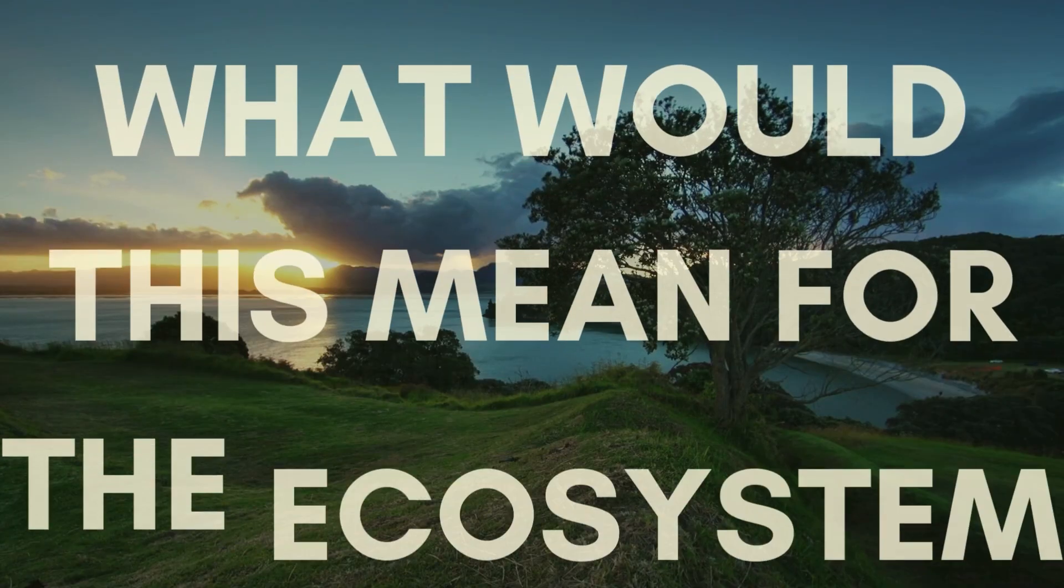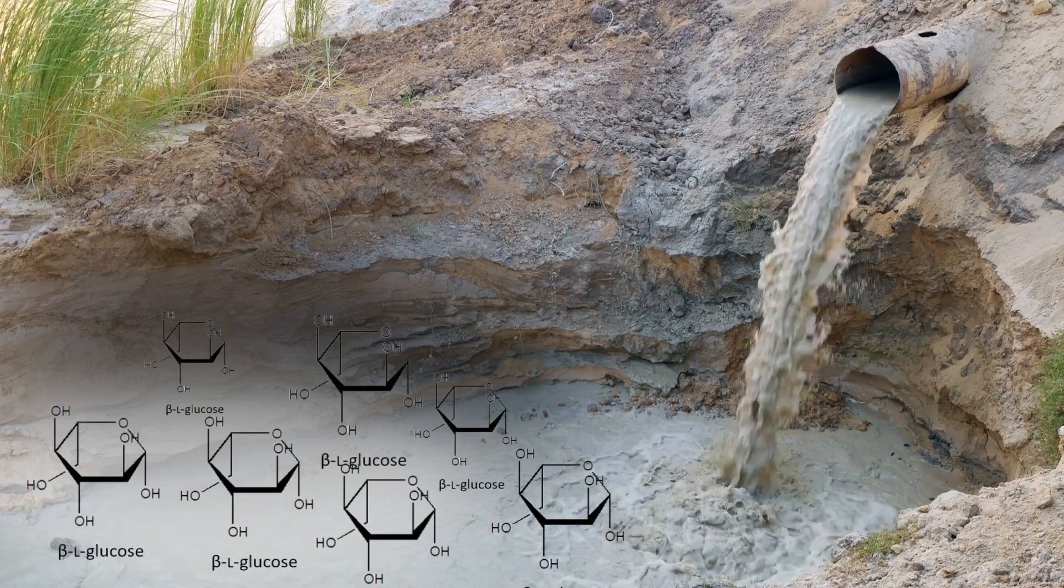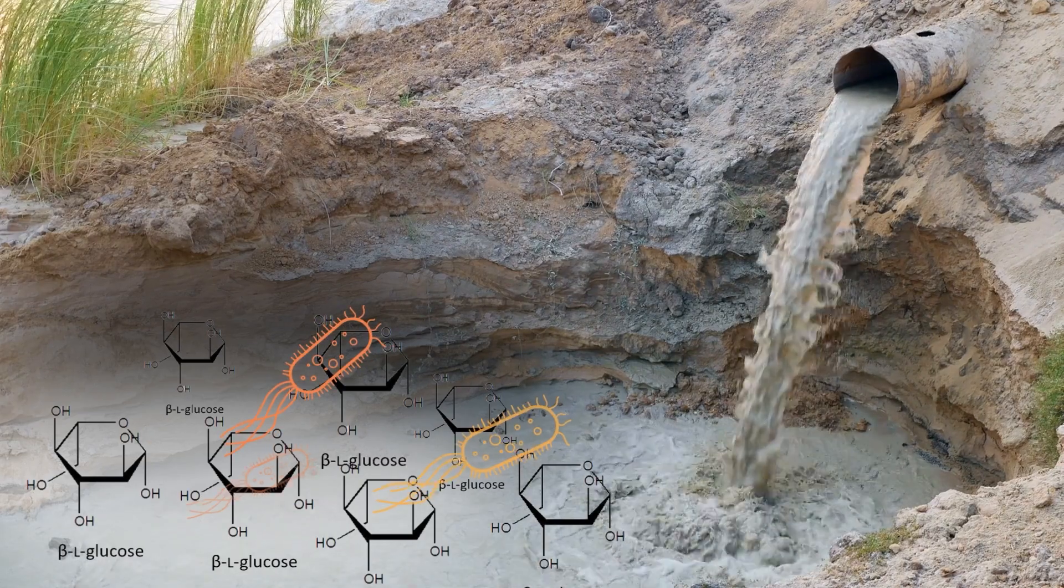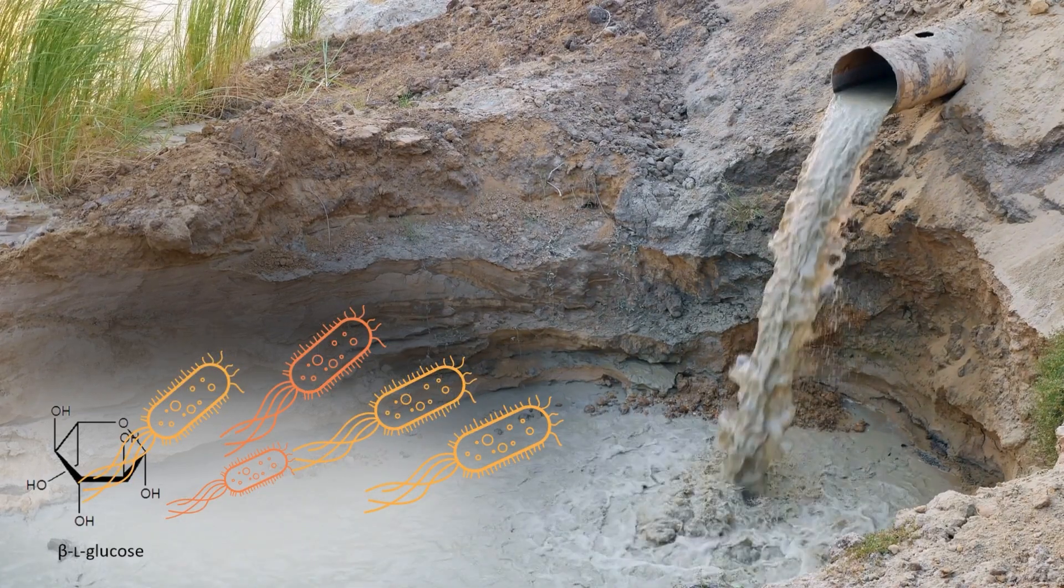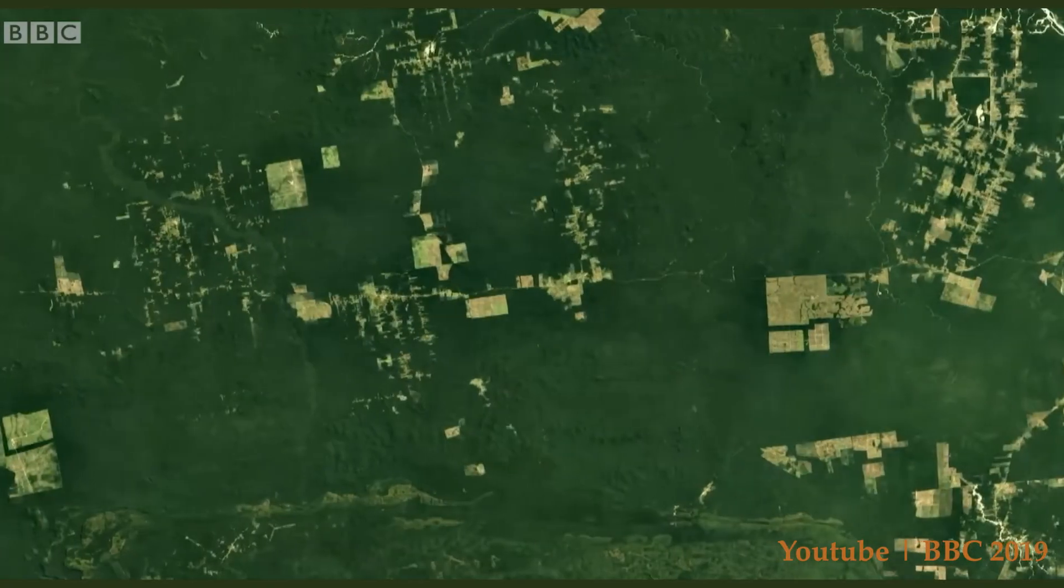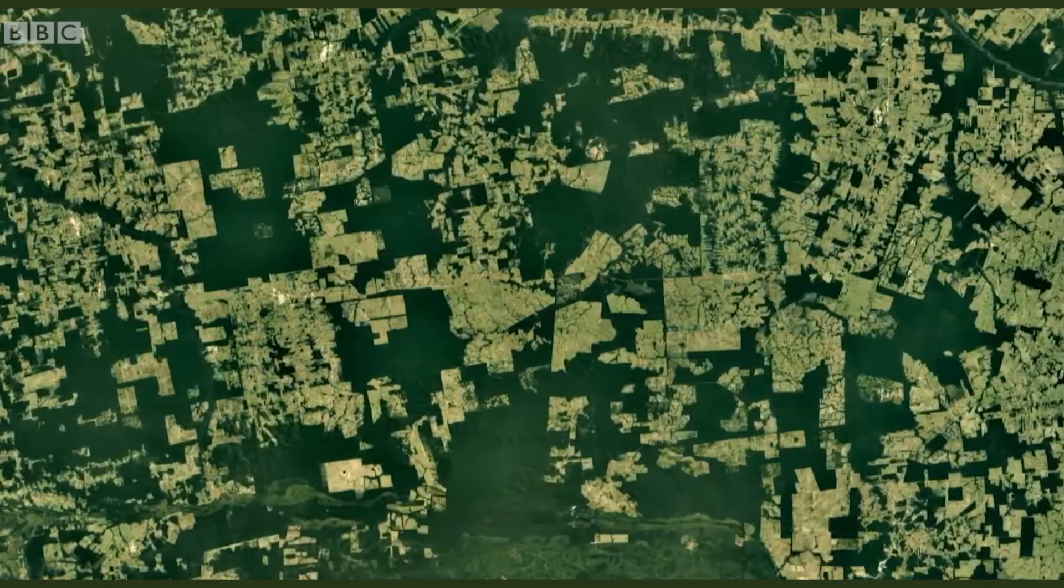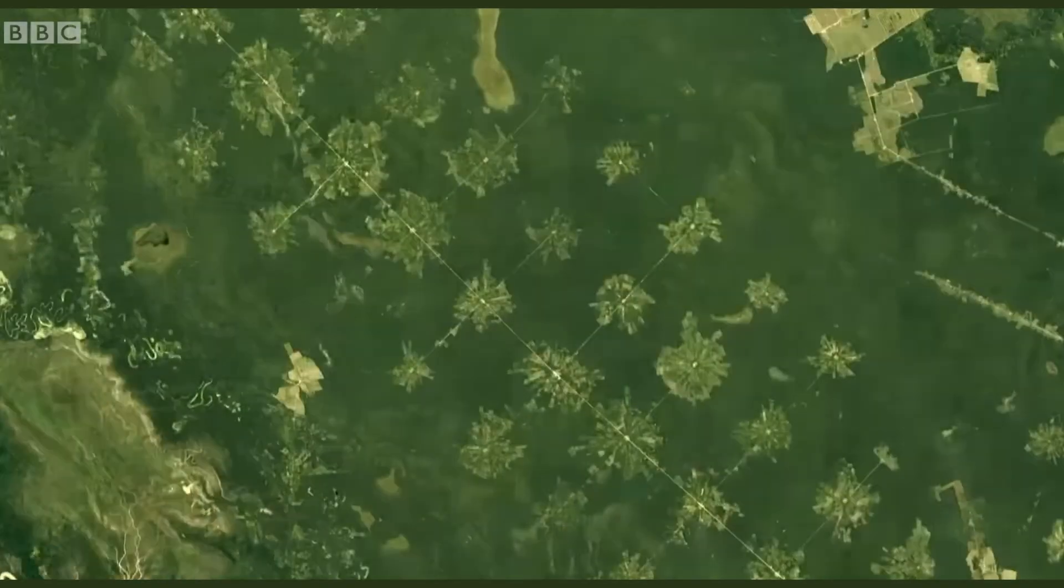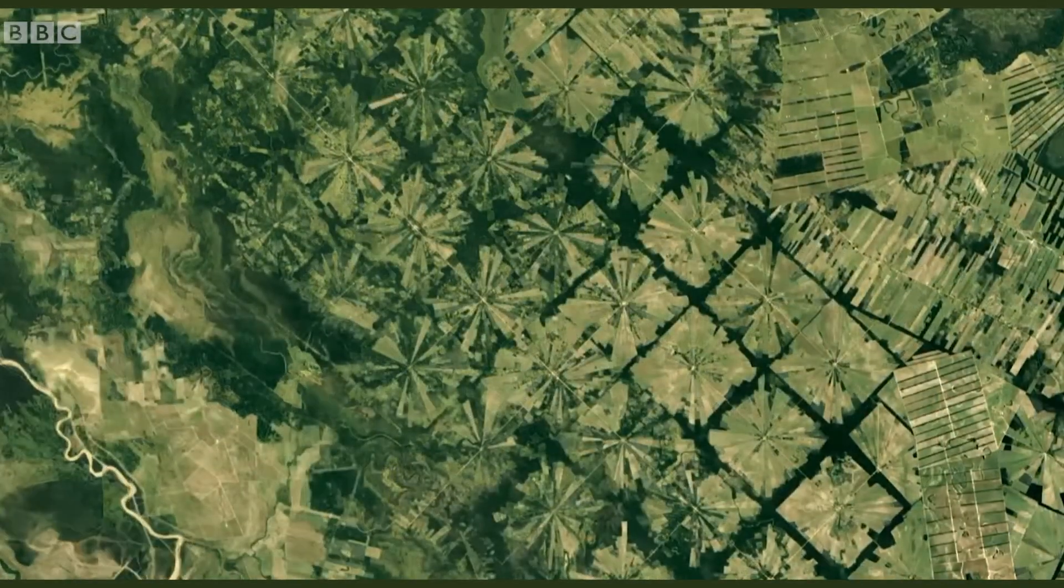But what would this mean for the ecosystem, and for us? On one hand, the evolution of organisms that can break down L-Sugars might help prevent environmental accumulation, acting as a natural check. On the other hand, introducing new microbial players could disrupt existing ecological balances. These organisms might outcompete native species for resources, leading to unforeseen consequences in the food chain.